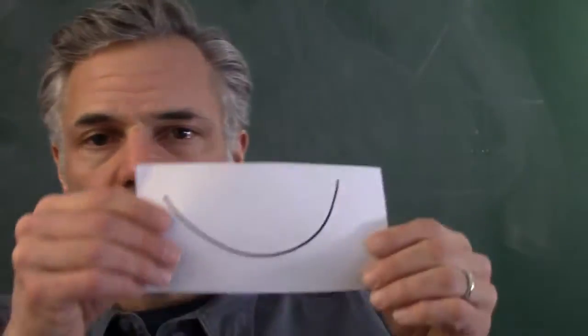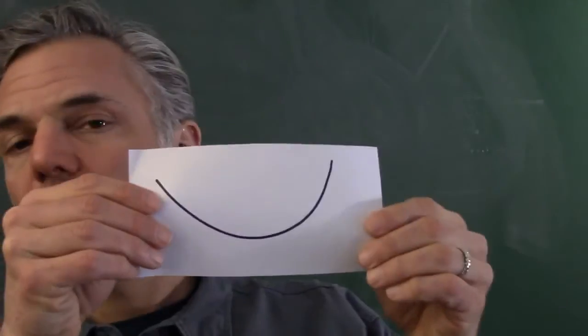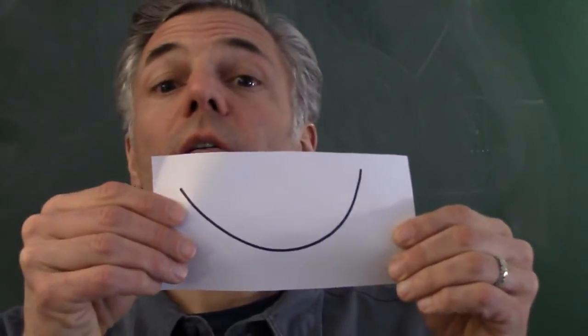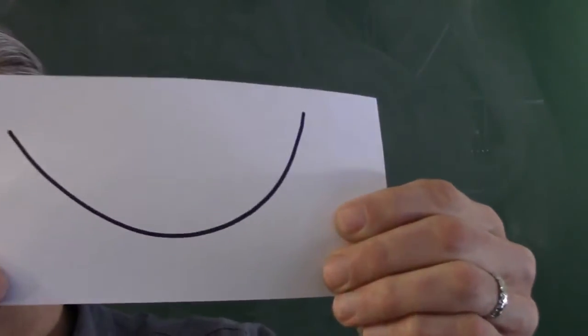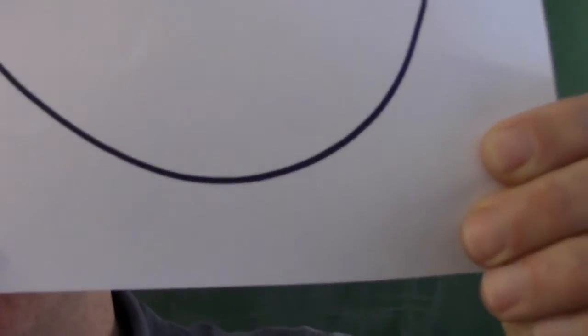Let me illustrate that once more. Here's the curve. I renormalize it — it's getting larger and larger, and I'm achieving that by moving it closer and closer to the camera. And it looks, okay, not exactly like a straight line, but hopefully quite a bit like a straight line.